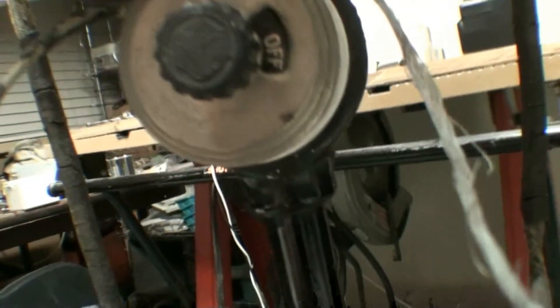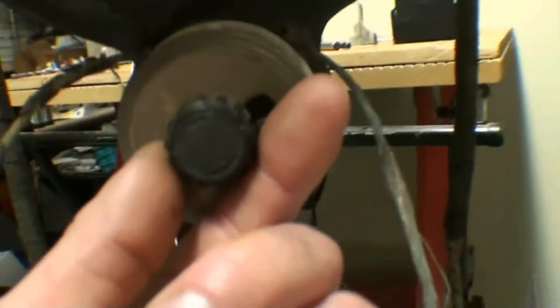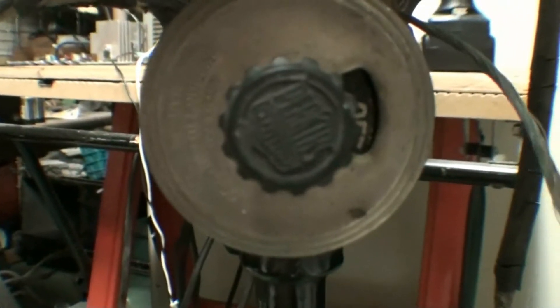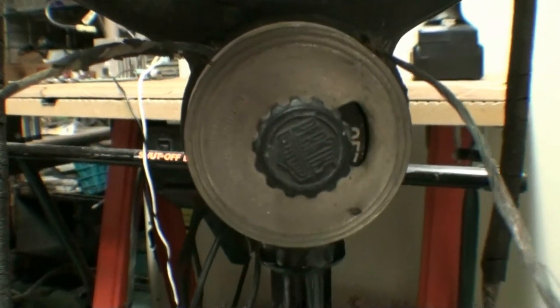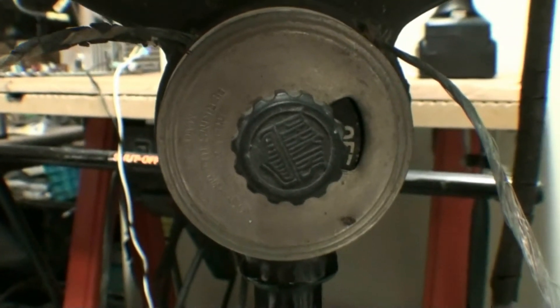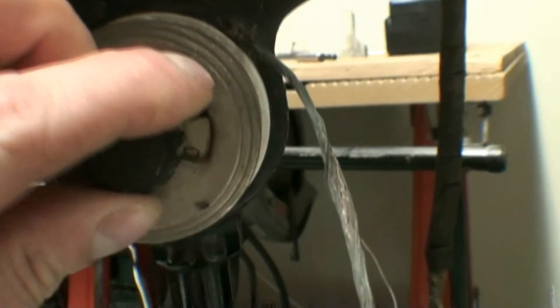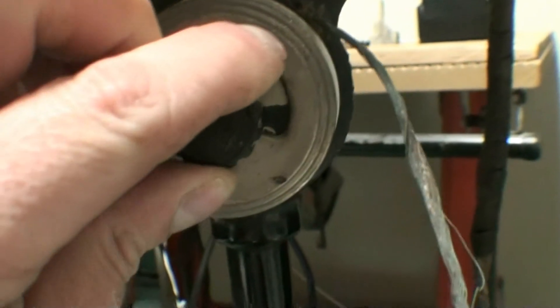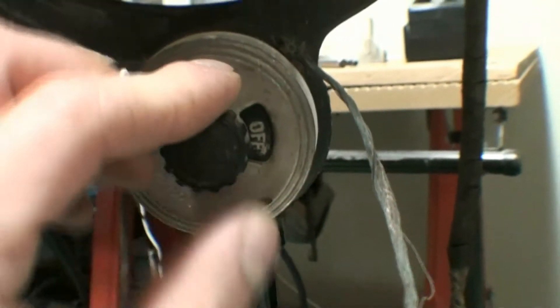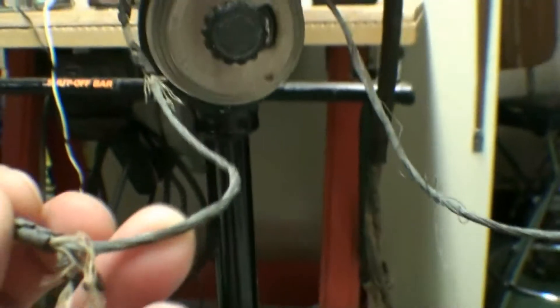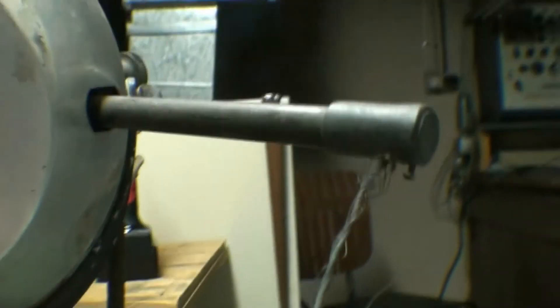And then here we have the power switch, which is a Perkins 10 amp 250 volt switch. We can see if we can focus on the Perkins logo there. This is just a standard old-fashioned rotary switch, on and off. Then we have the wires that are - I think this is the only insulation left on them - going to the carbon holders.